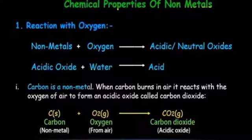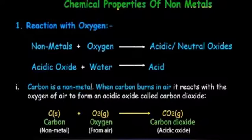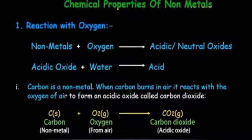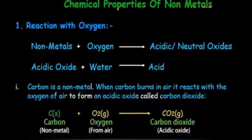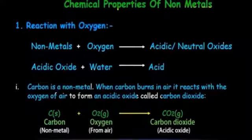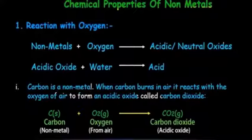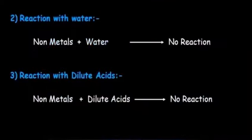For example, carbon, which is a non-metal, when it burns in air it reacts with the oxygen present in air to form an acidic oxide. The name of that acidic oxide is carbon dioxide. The reaction is: C + O₂ → CO₂, which is an acidic oxide.